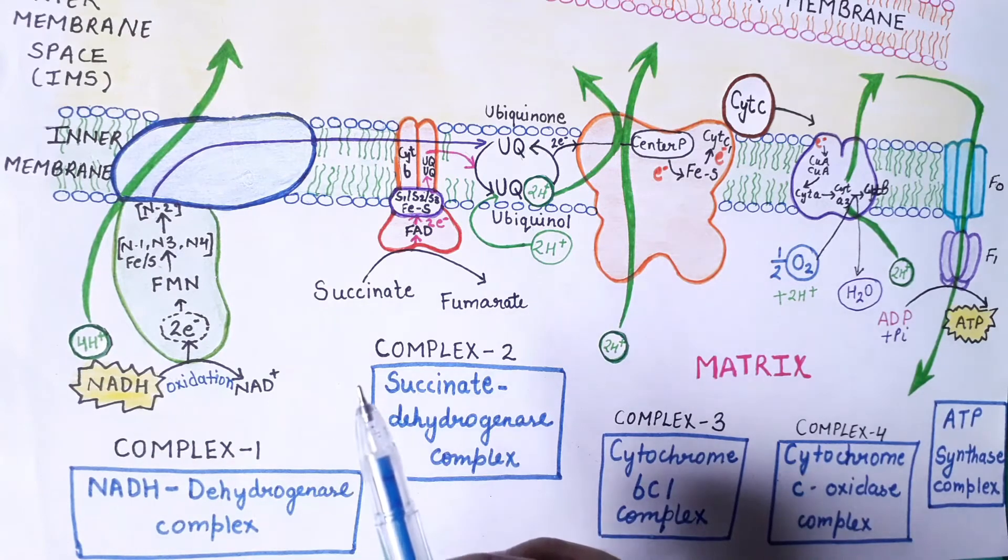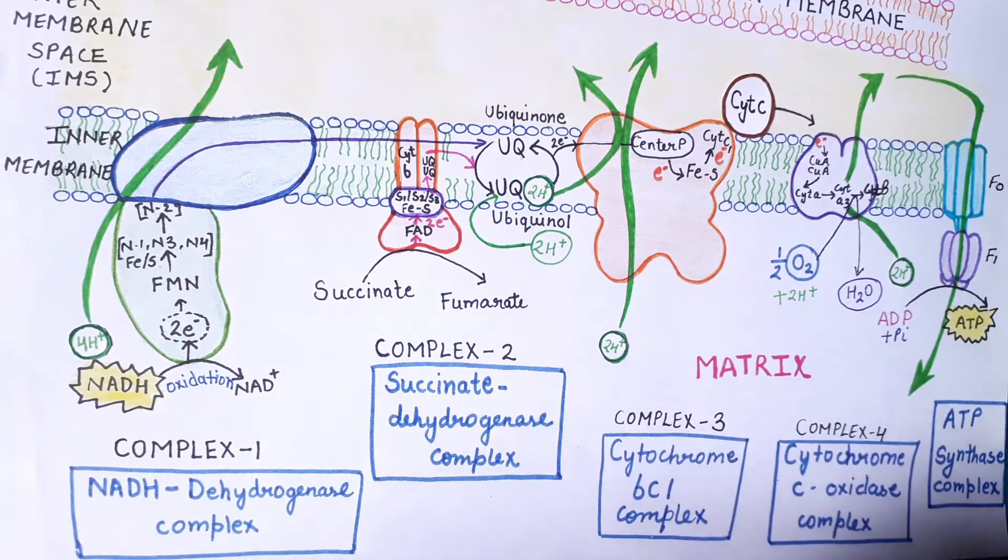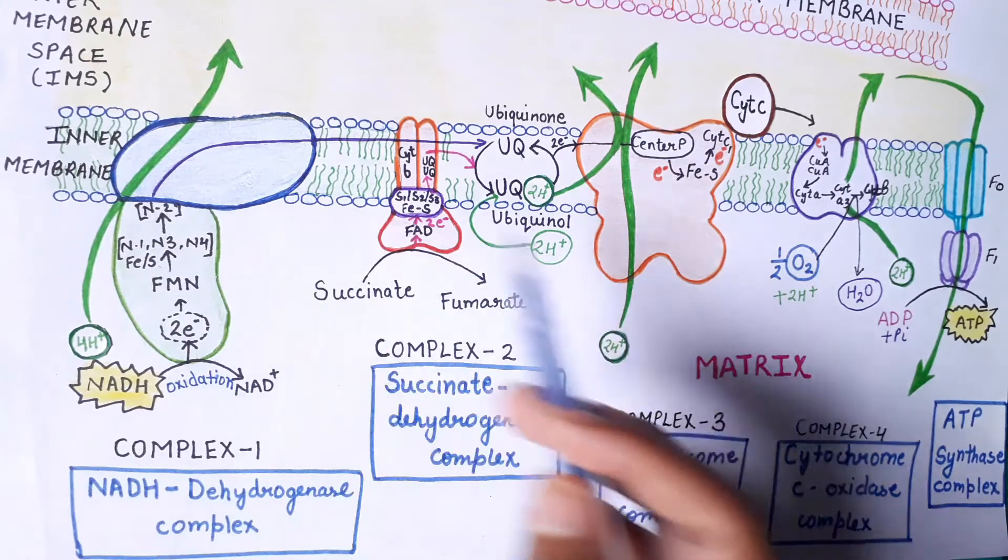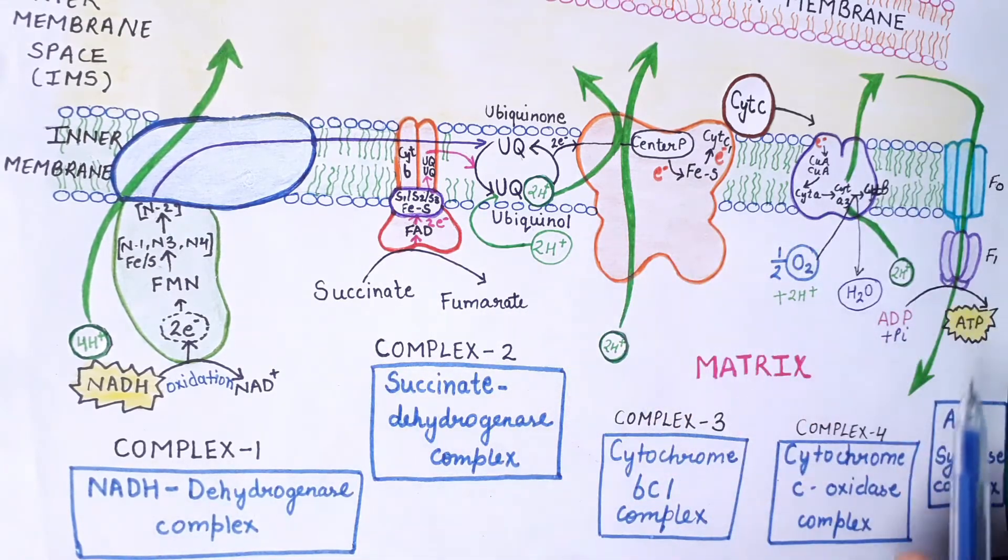That's why this process is called oxidative phosphorylation: it firstly involves the oxidation of the substrate within the electron transport chain, and later on it involves the formation of ATP.